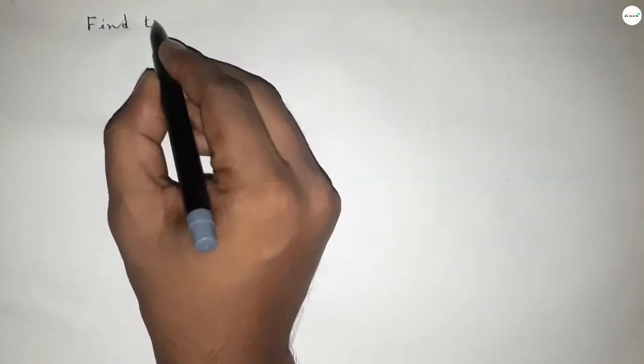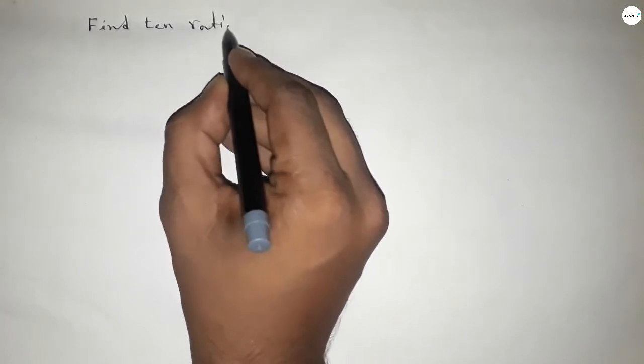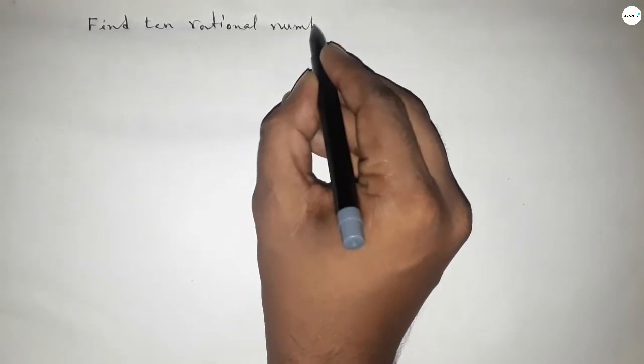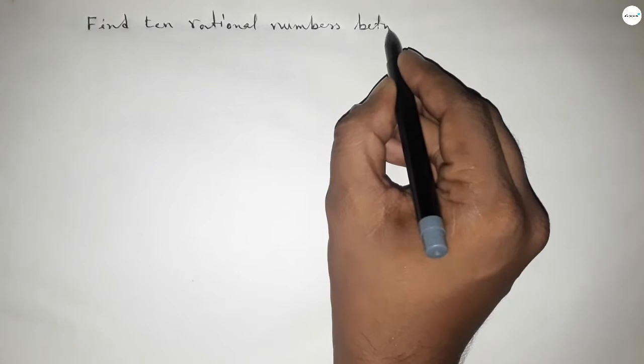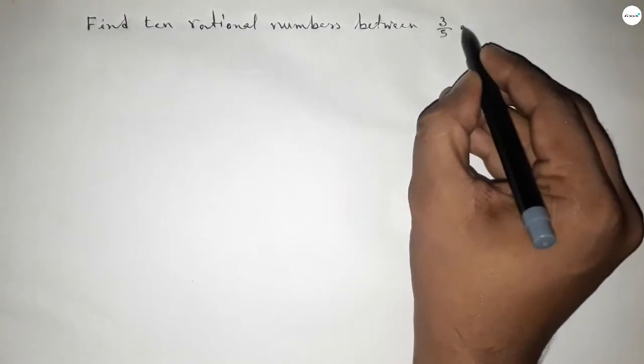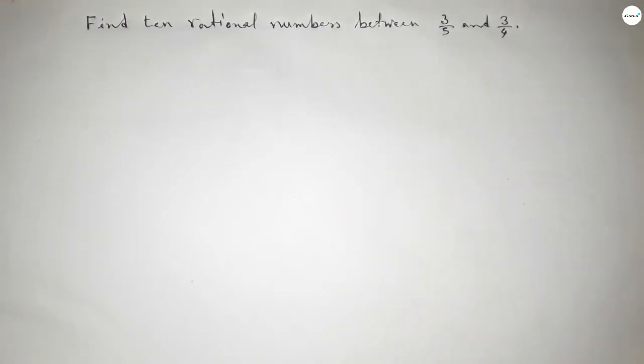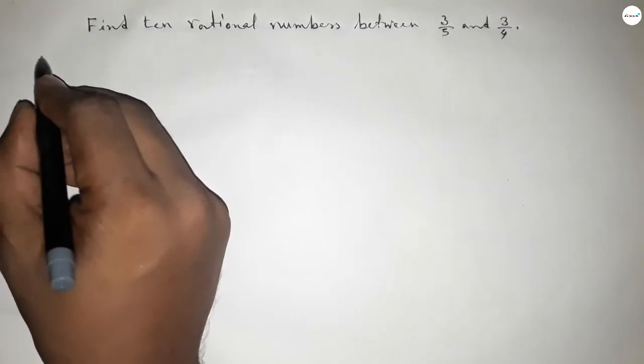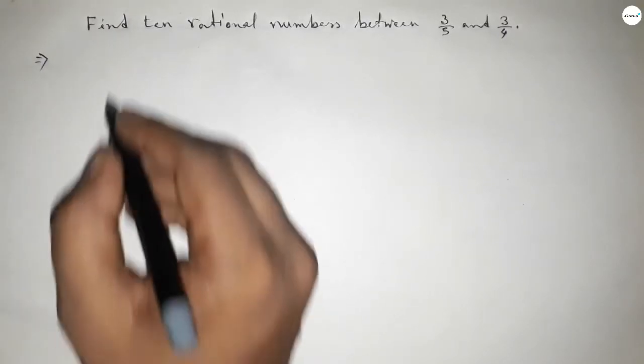Hi everyone, welcome to SHR Classes. Today in this video we have to find 10 rational numbers between 3 over 5 and 3 over 4. So let's start the video. First of all, write down here the given numbers: 3 over 5 and 3 over 4.